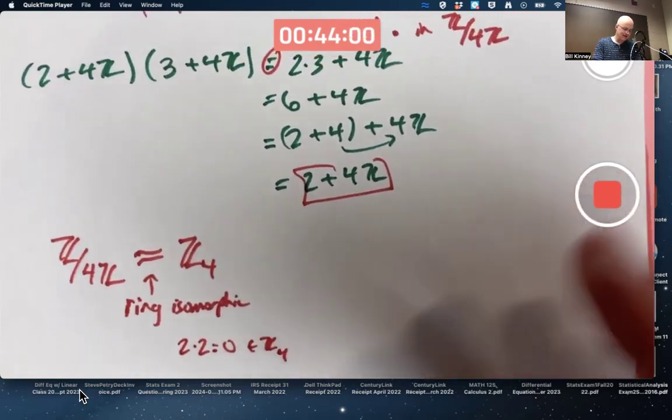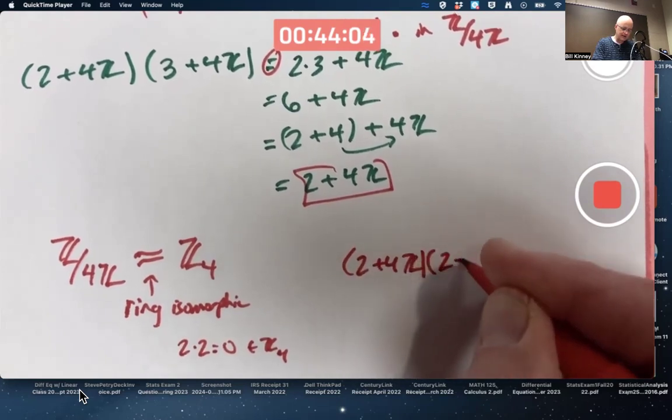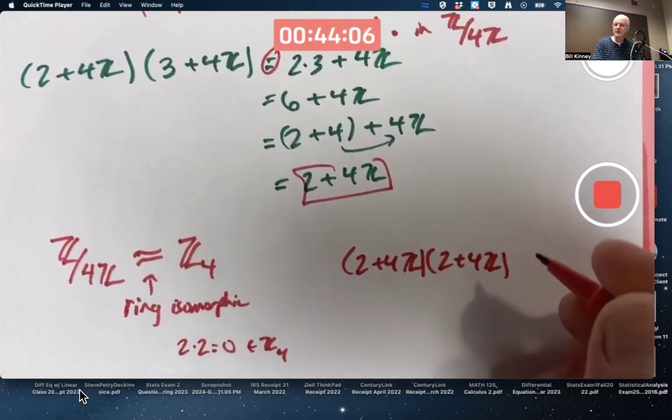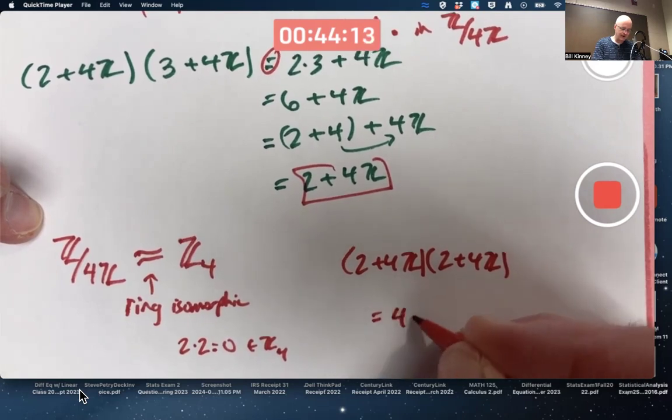Does that mean (2 plus 4Z) times (2 plus 4Z) also equals 0 in here? Yeah, it does.